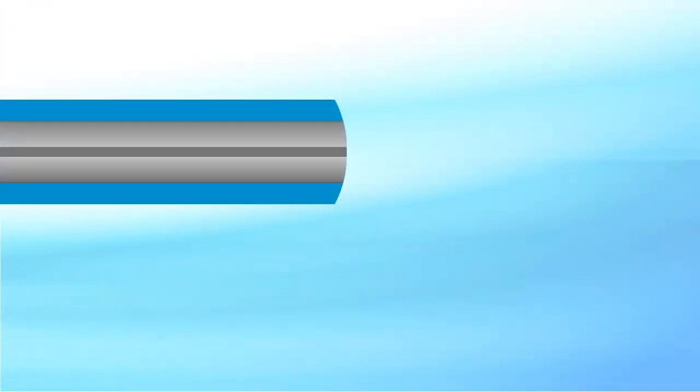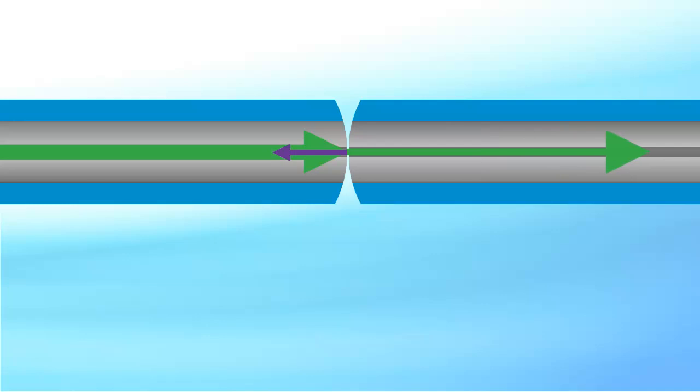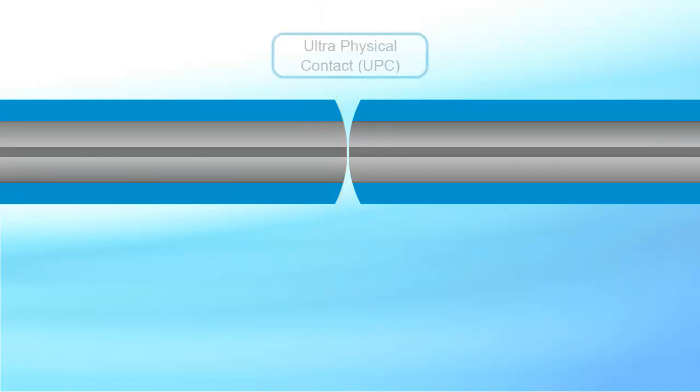With single-mode fiber, the core size is only 8 to 9 microns, so ensuring the maximum amount of light can be transmitted through the connection, the polishing process has been improved to produce an enhanced polished surface, and this design is called UPC, ultra-physical contact. Most manufacturers produce UPC single-mode connectors which are identified by their blue bodies. The losses on this style of connector are reduced to around 50 dB.